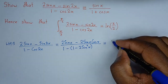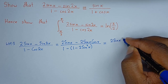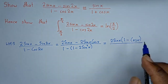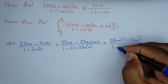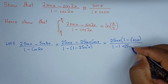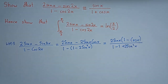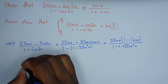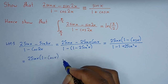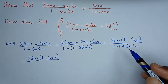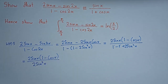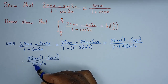From there, we factor out what is common in the numerator, which is 2 sin x, giving us 2 sin x(1 − cos x) in the numerator. The denominator becomes 1 − (1 − 2 sin²x), which simplifies to 2 sin²x. So we have 2 sin x(1 − cos x) divided by 2 sin²x.